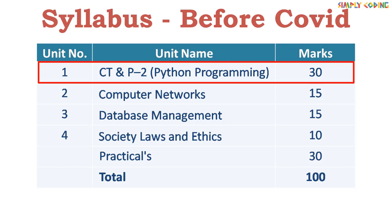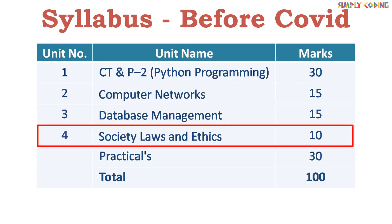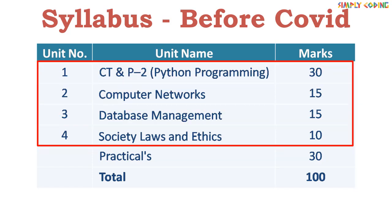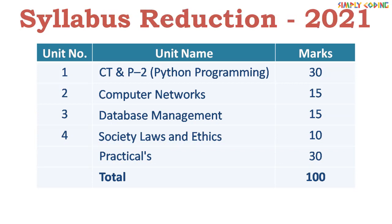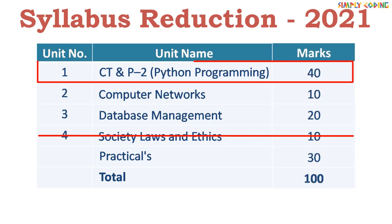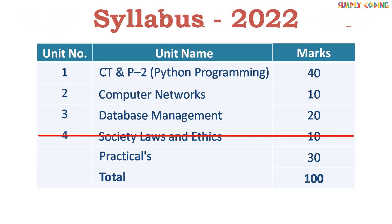The four units were: Python programming for 30 marks, Computer Networks for 15 marks, Database Management for 15 marks, and Society, Law and Ethics for 10 marks — totaling 70 marks of theory and 30 marks of practical. Last year, the syllabus was cut from all units and Society, Law and Ethics was dropped completely. As a result, Python programming became 40 marks, Computer Networks 10 marks, and Database Management 20 marks.